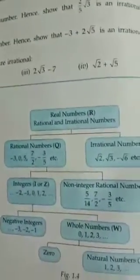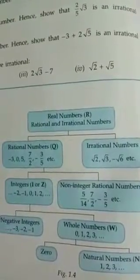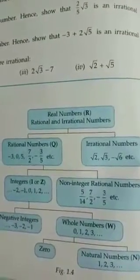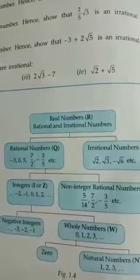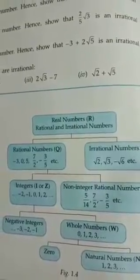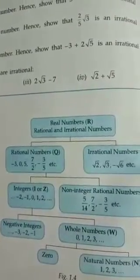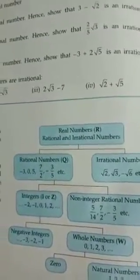You can see the chart here in your book. All the numbers shown here are called real numbers. Under that you have rational and irrational — both types of numbers coming.